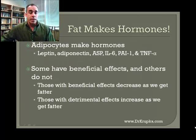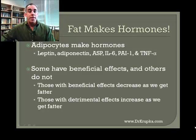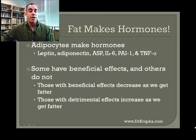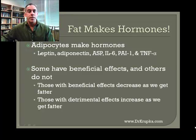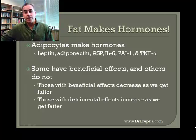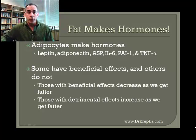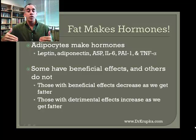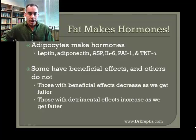The takeaway is that adipocytes, our fat cells, make hormones — they don't just sit there and hold calories. They make leptin, adiponectin, ASP, IL-6, PAI-1, and TNF-alpha. Some of these have beneficial effects and others do not, but as we get larger the beneficial ones are blunted, and in some cases reverse completely, while the detrimental ones get stronger and stronger as we put on more adipose tissue.